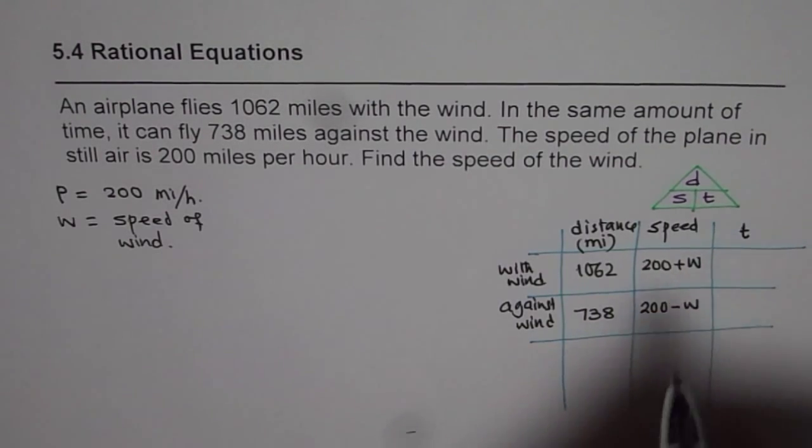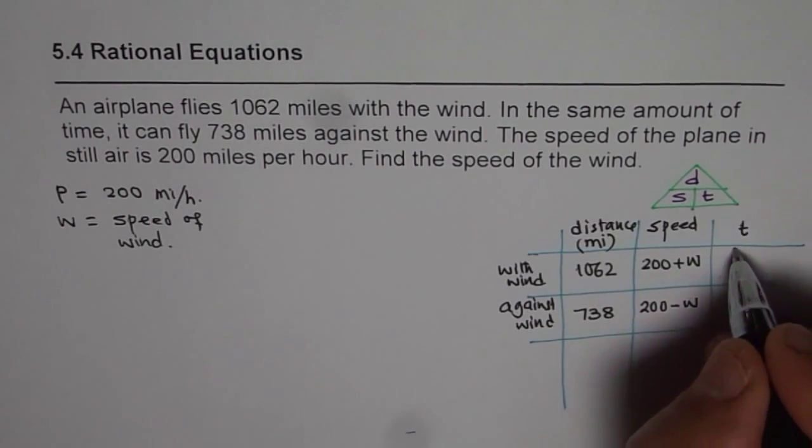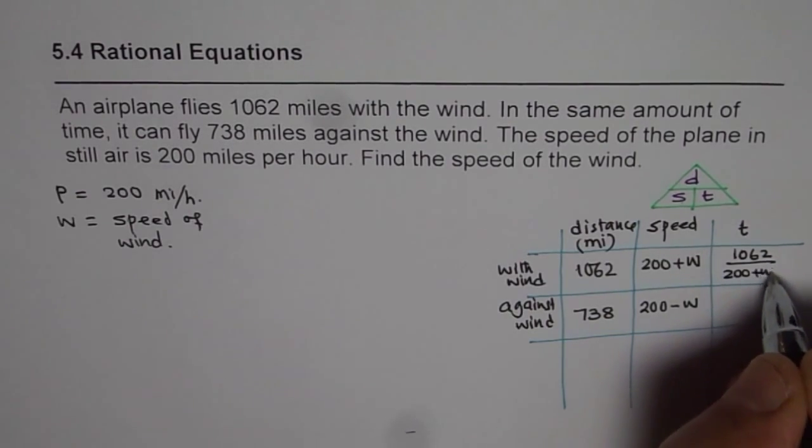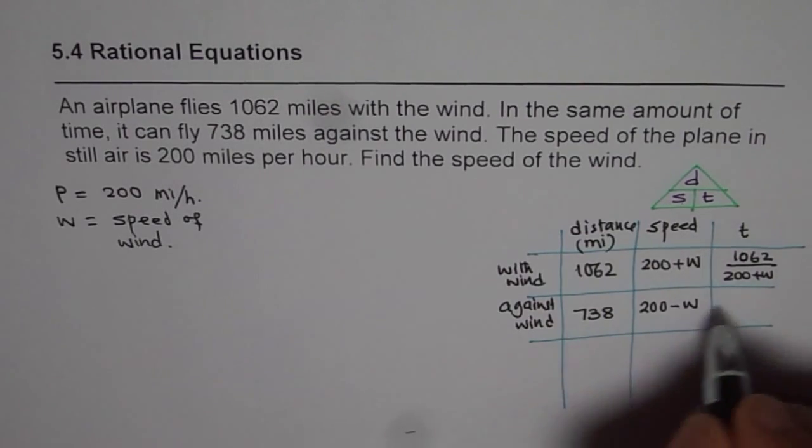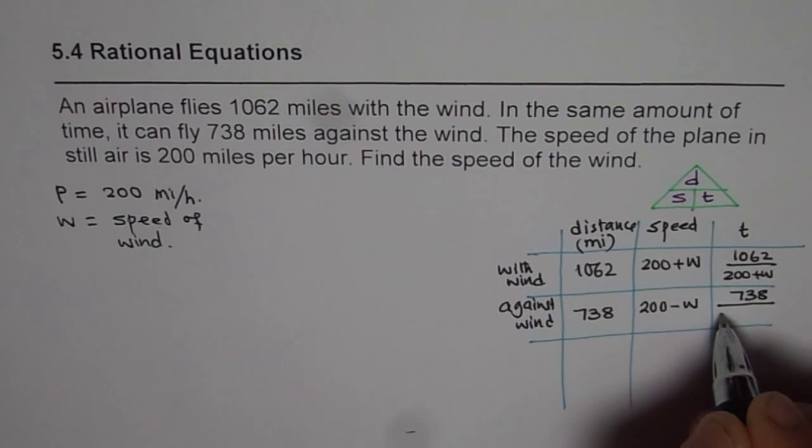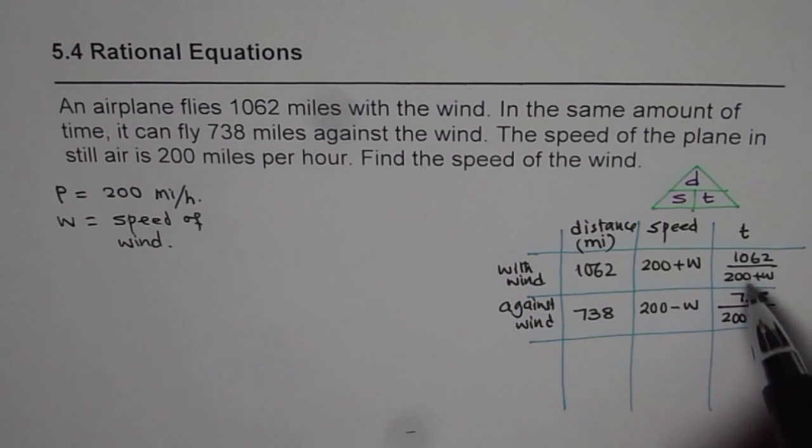Now how about the time? Time here is distance divided by speed. So time should be 1062 divided by 200 plus w when you are going with the wind. And against the wind, it should be distance traveled is 738 divided by the speed of 200 minus w. Now it is given to us that these two times are equal. That means we can relate them with an equation and find the variable w. So that is the strategy.